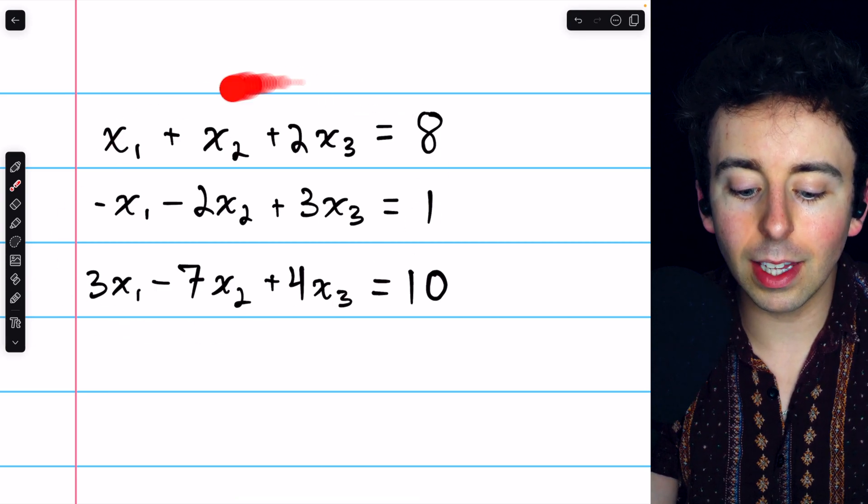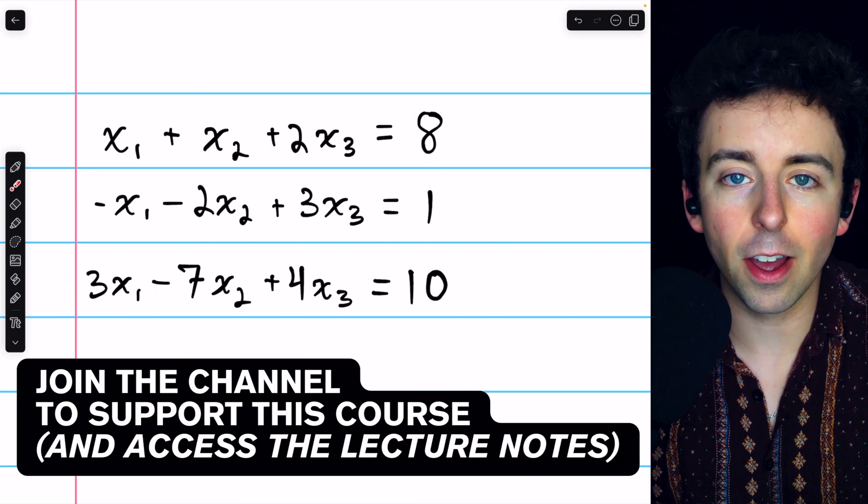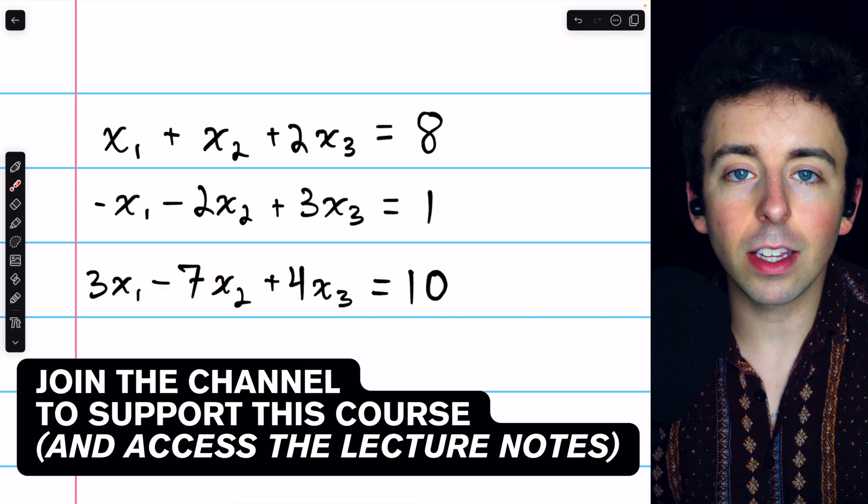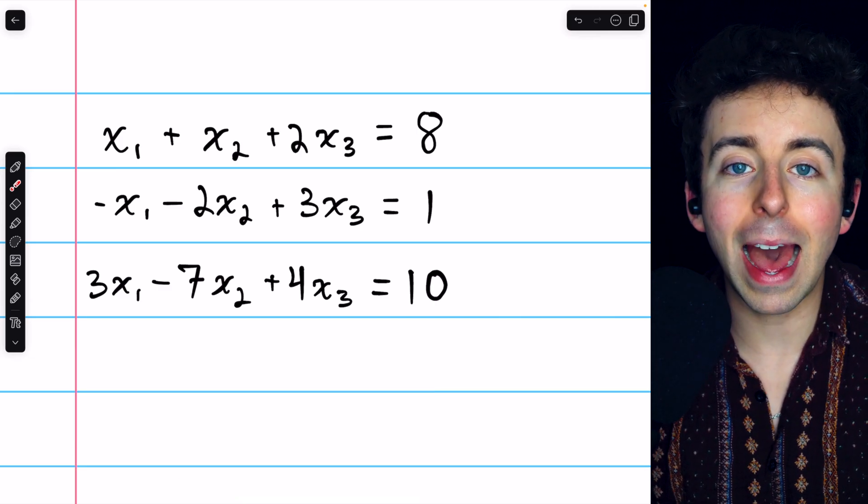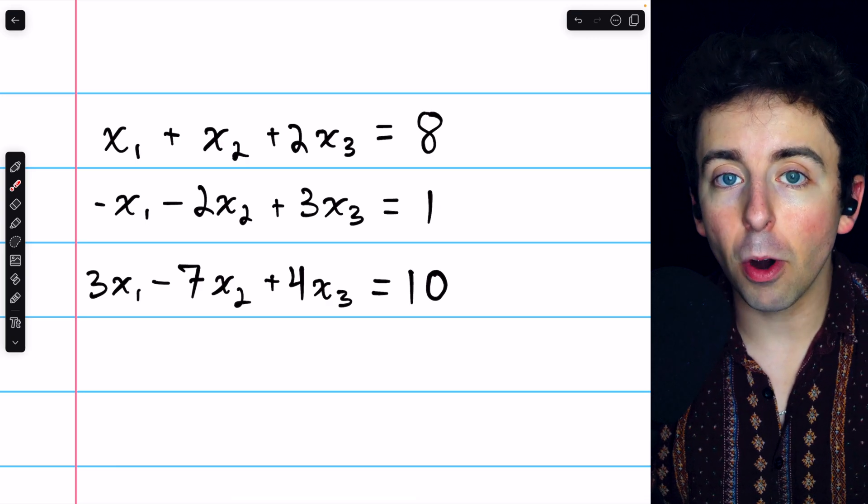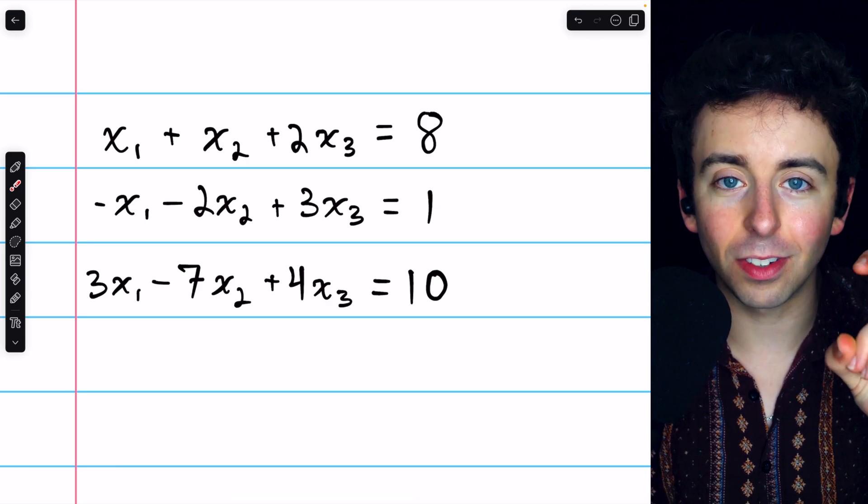This is a system of three linear equations in three unknowns. We're going to solve it using elementary row operations and what's called back substitution. This process is also called Gaussian elimination.